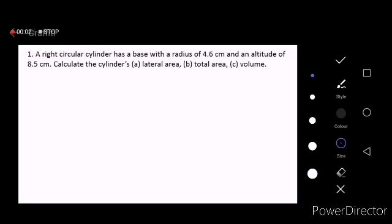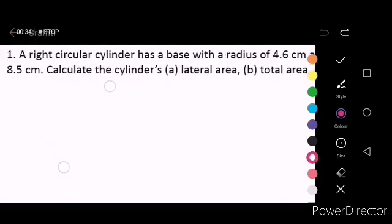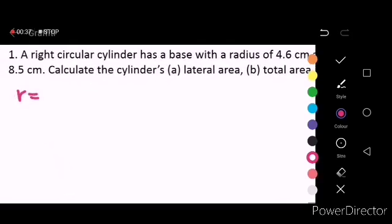For the first problem, a right circular cylinder has a base with a radius of 4.6 centimeters and an altitude of 8.5 centimeters. Now we need to calculate the lateral area, total area, and the volume of this cylinder. As you can see all the necessary dimensions are already given: the radius which is 4.6 centimeters and the height which is 8.5 centimeters.